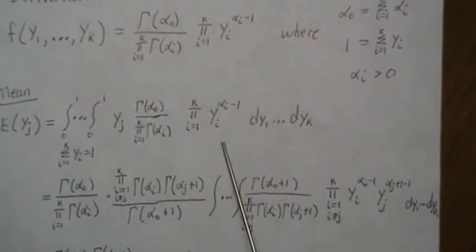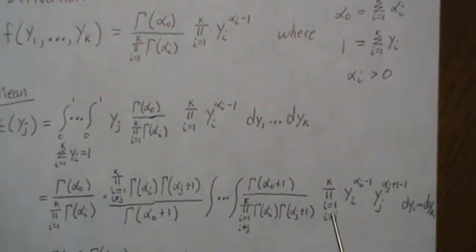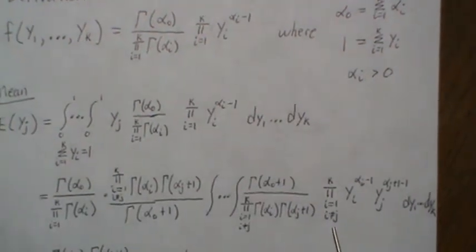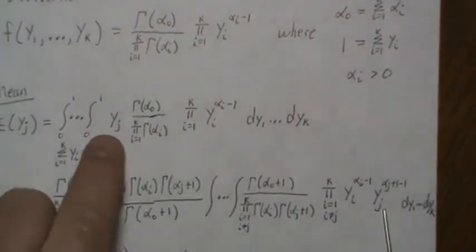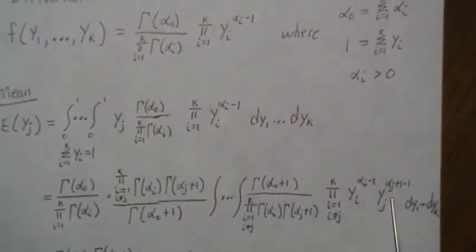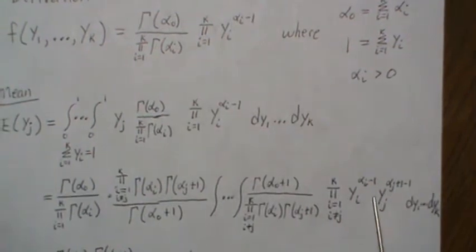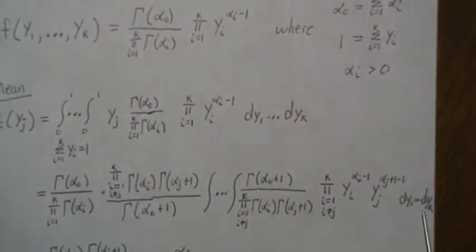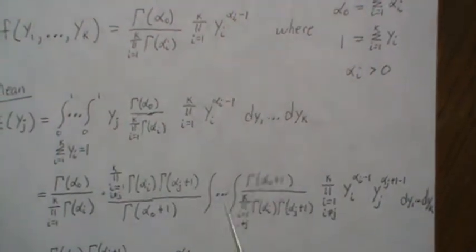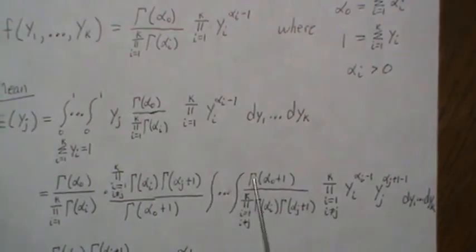Here we're summed from i equals one to k but not the jth term—that's what this is. For the jth term we have to combine that in, so we get alpha j plus one minus one. Well, this right here is a Dirichlet distribution integrating over all the range, so this is one.